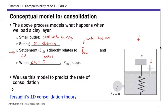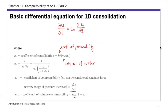Terzaghi's solution solves for the excess pore water pressure dissipation, and then we relate that to the degree of consolidation. This is the governing equation in Terzaghi's 1D consolidation theory. The unknown here is U, which is that excess pore water pressure. The solution of this PDE gives U as a function of depth Z and also as a function of time.